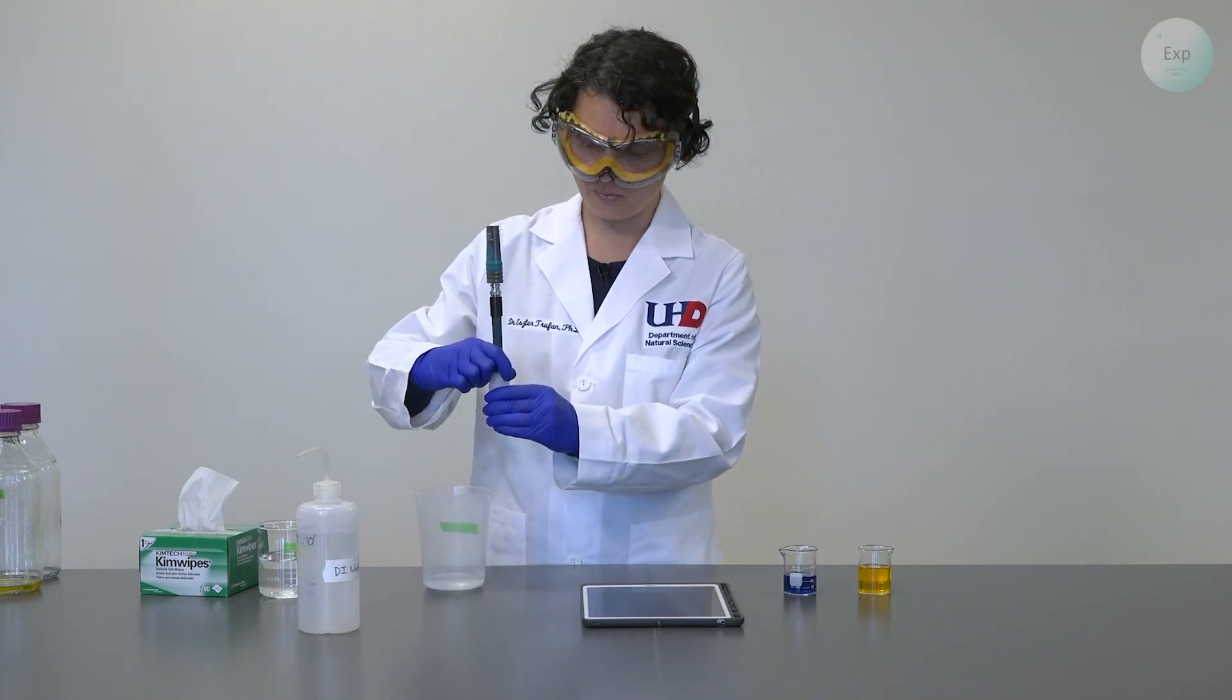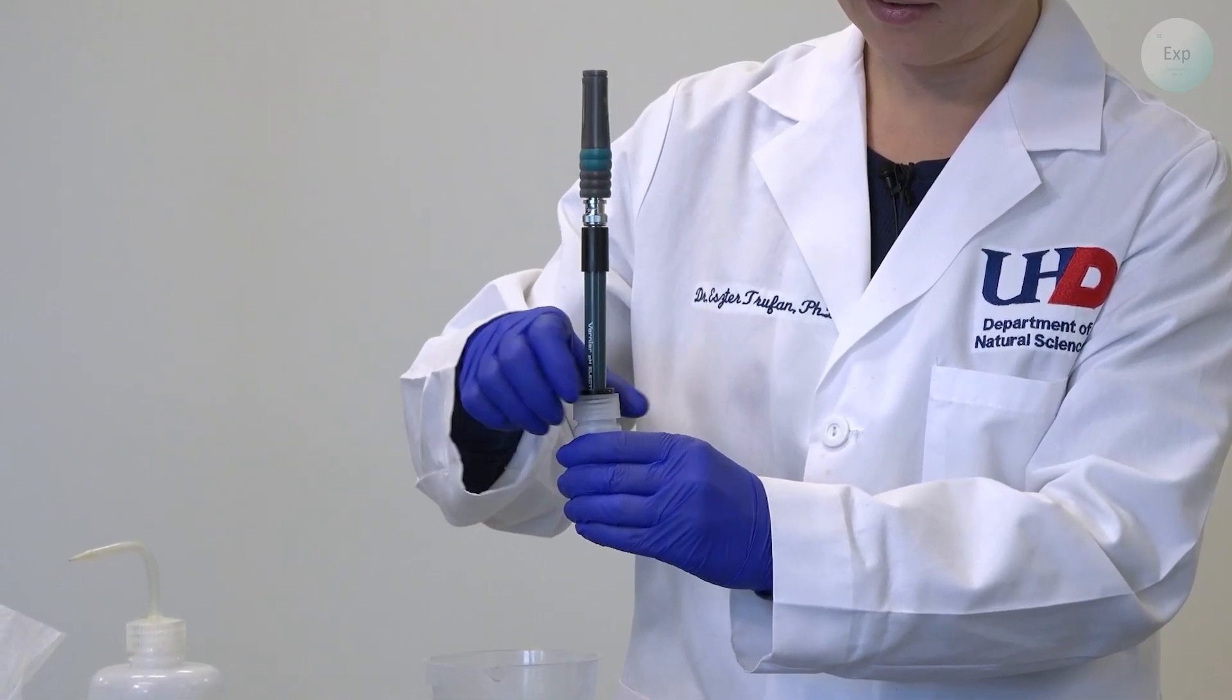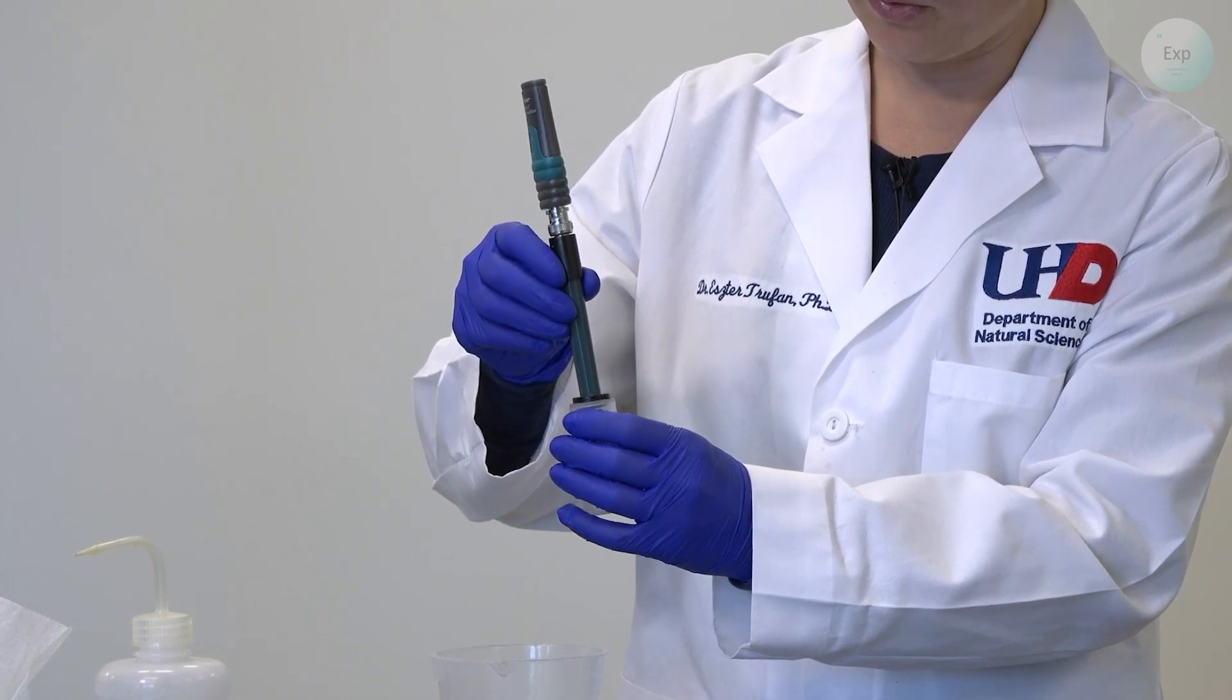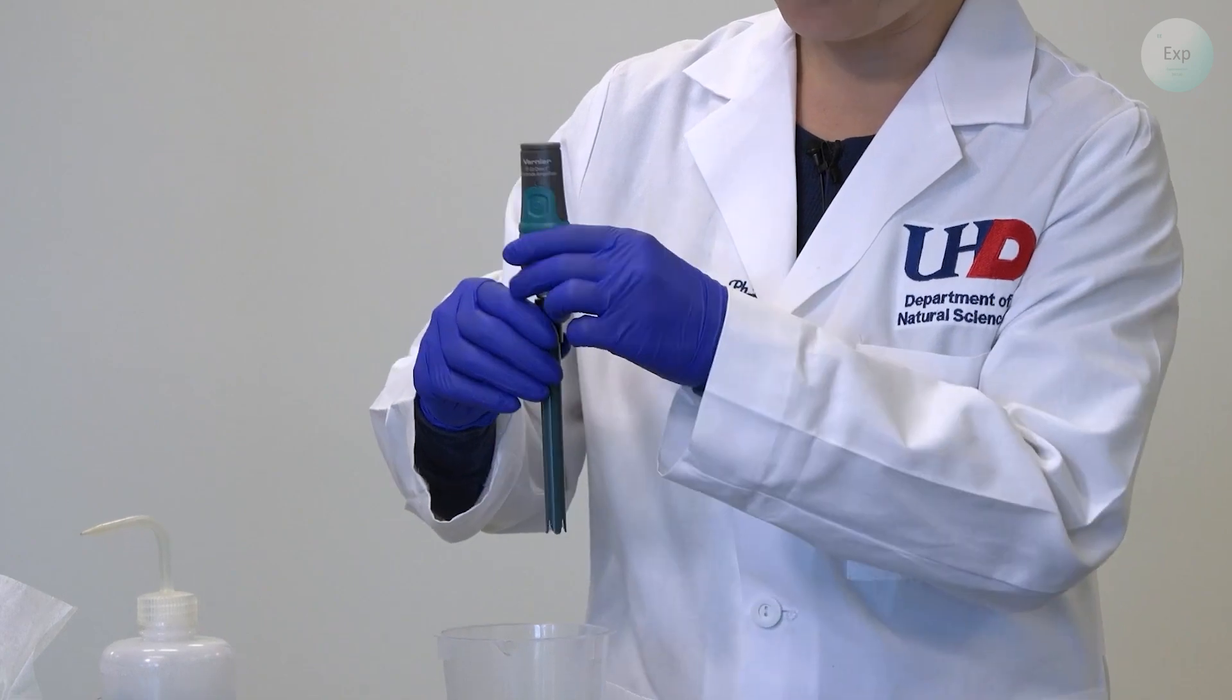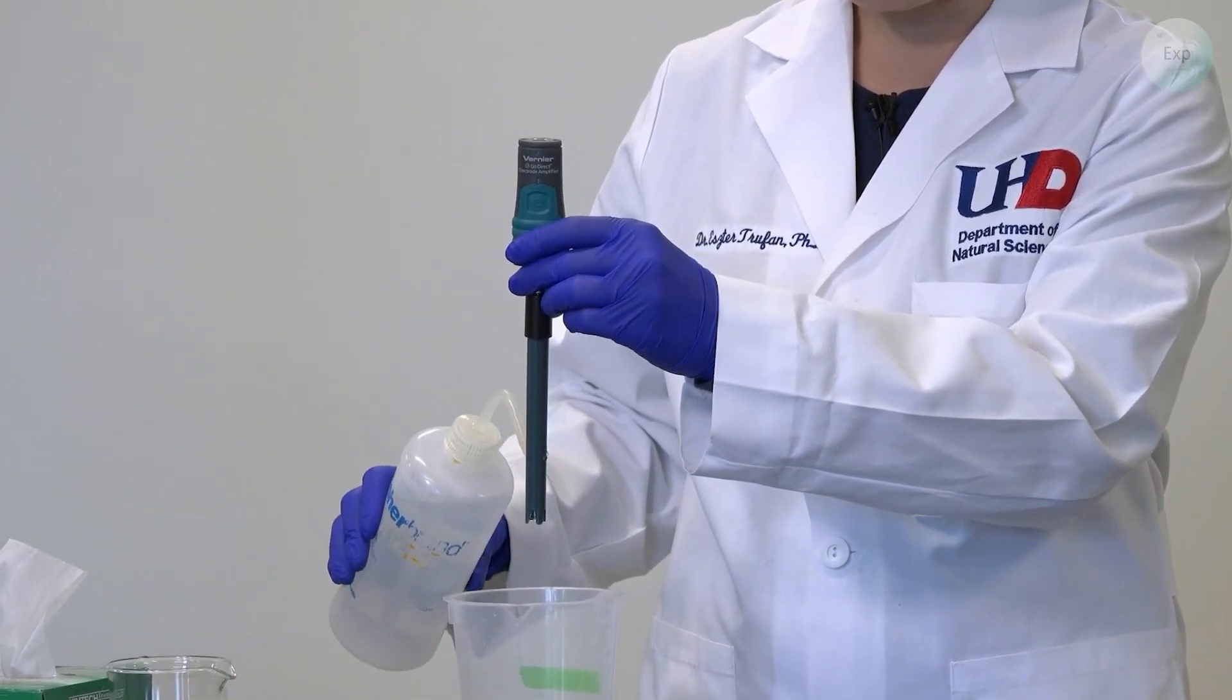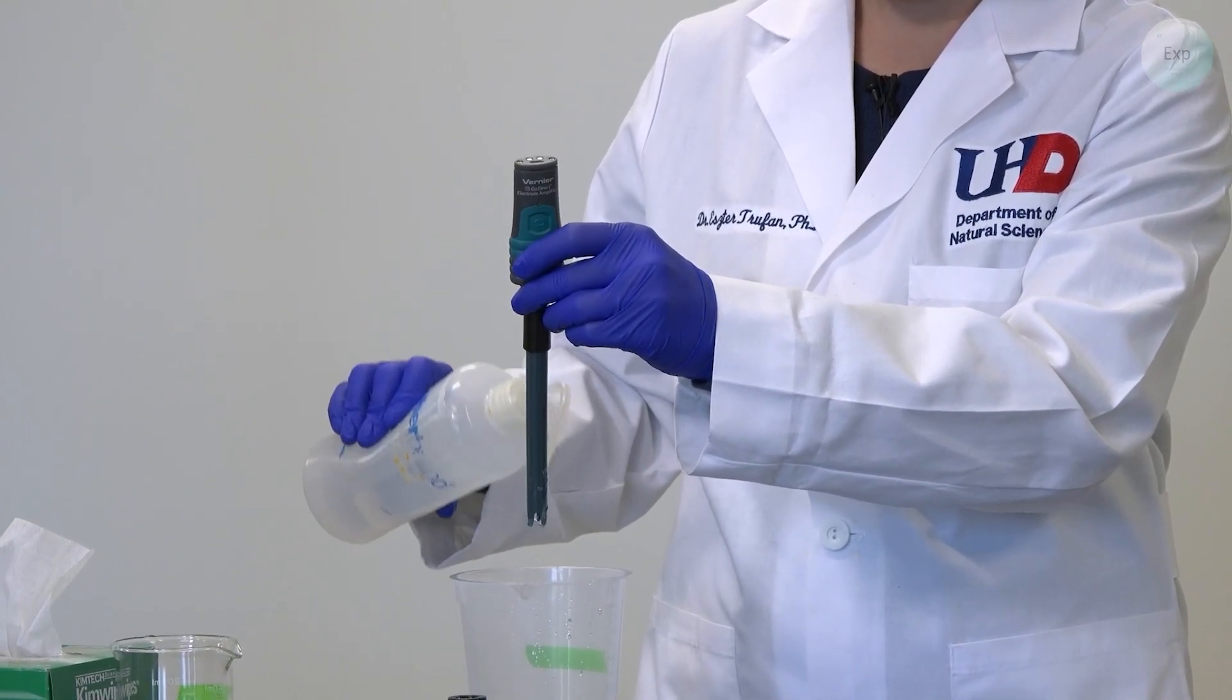The way it works is first we slightly unscrew the cap, and this will ease the pressure on the pH probe. We don't open it completely. We just slide out the pH probe. At that point, we take our deionized water in the squirt bottle and rinse our pH probe.